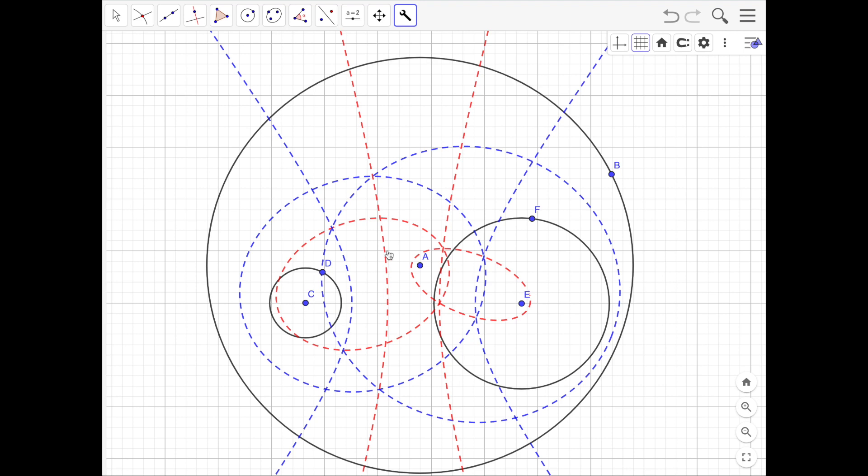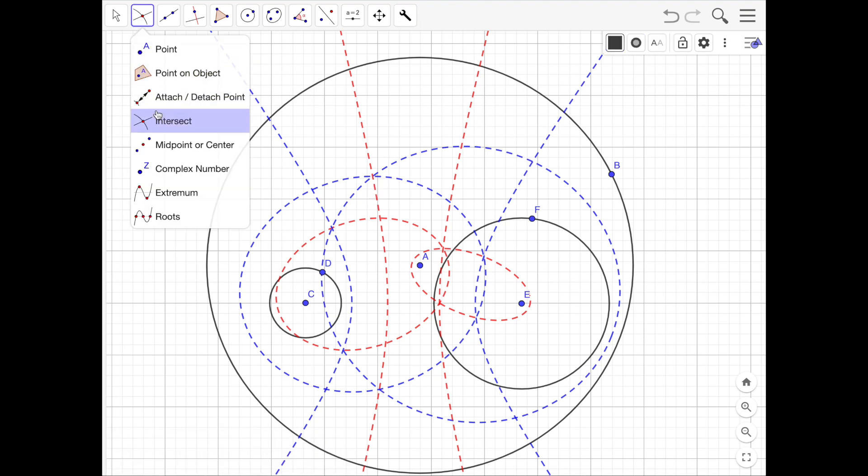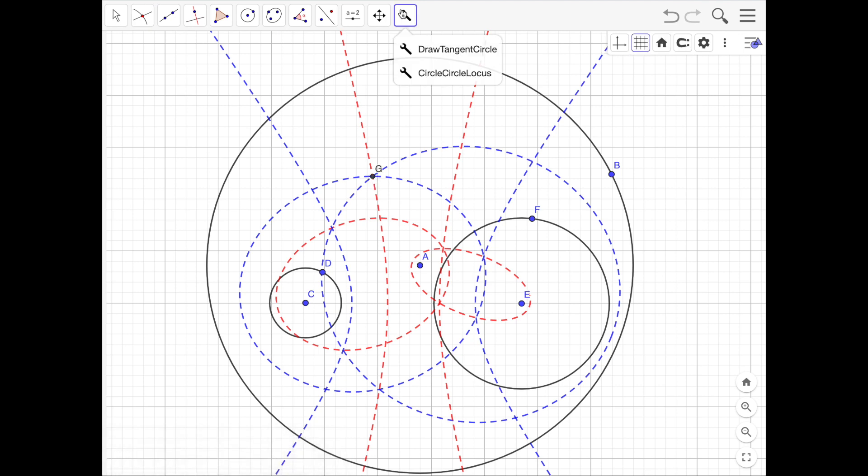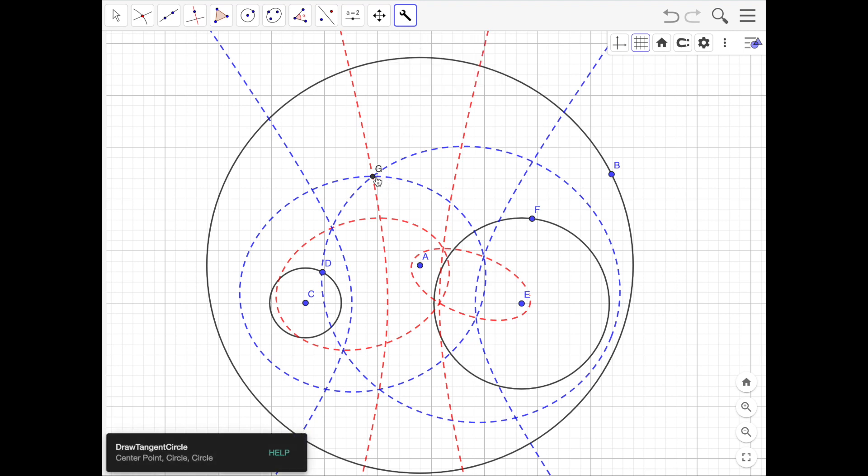So again, we find places where the three lines intersect. It looks like there's one here and one here. Let's just choose that one. So we do intersect, and we mark that point where they intersect.